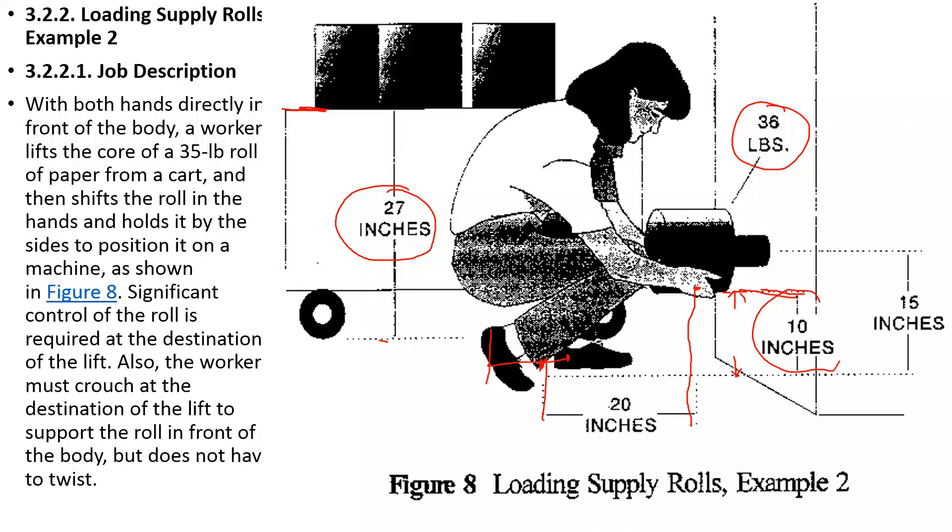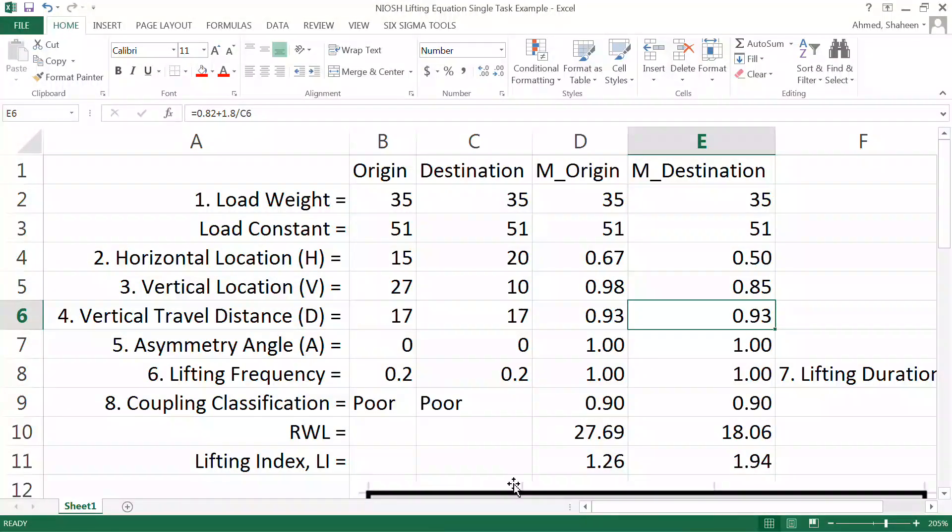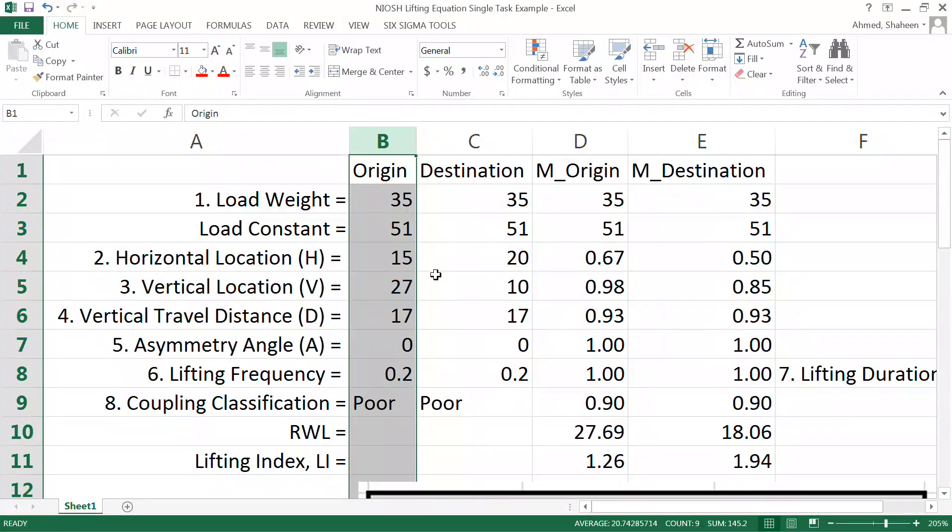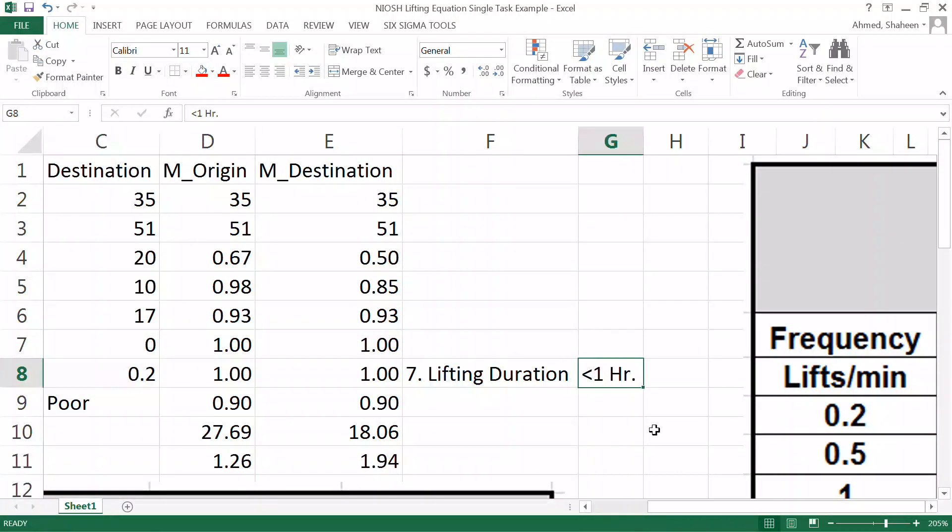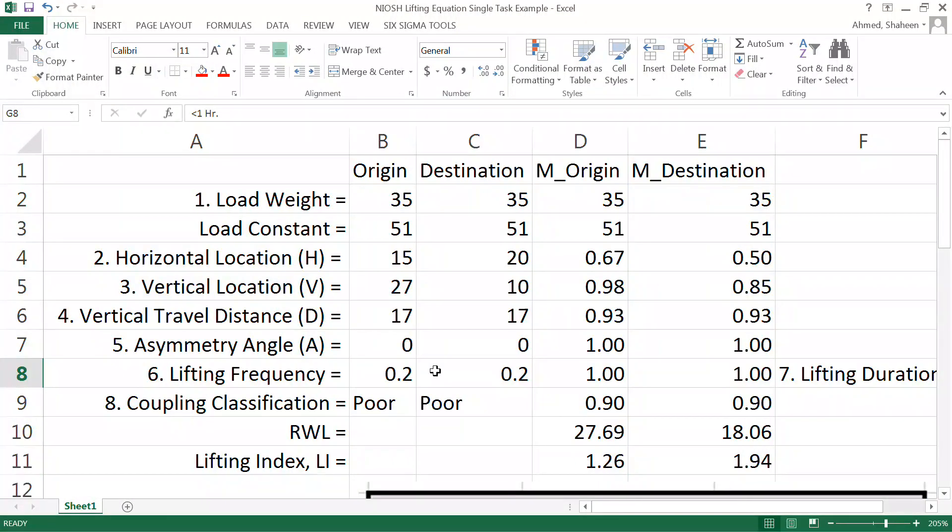I have entered all these values into this Excel file. So these are the values for where they originally were. This is the destination of the roller. The frequency, all of these are provided in the example. So 0.2 lifts per minute and the lifting duration was provided less than one hour. So this is a short lift.